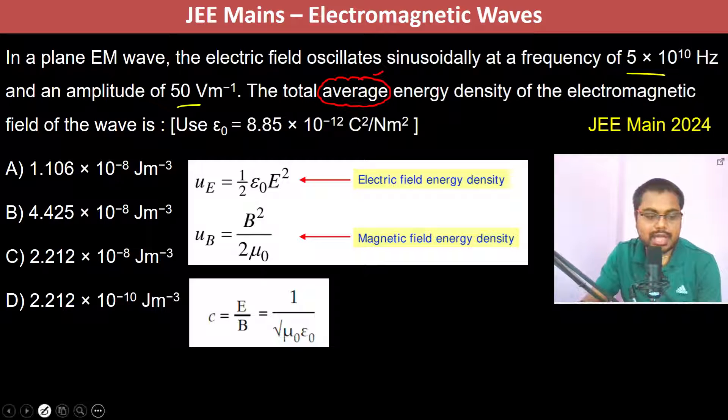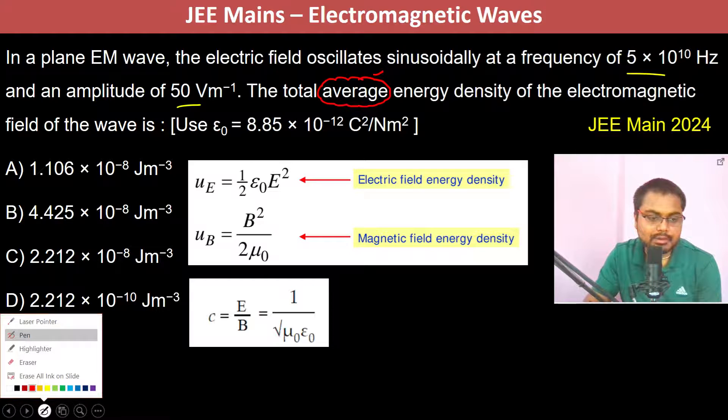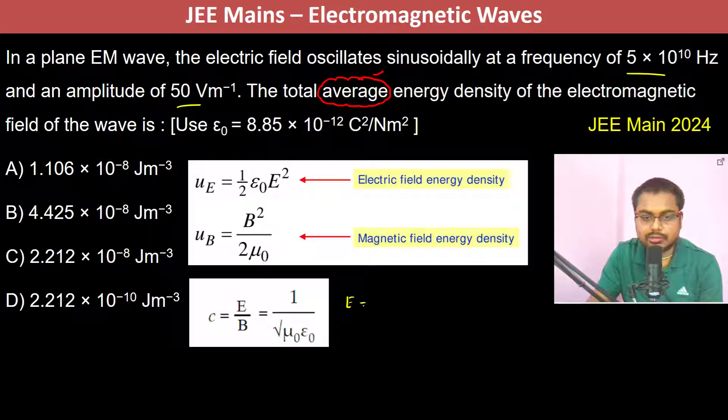Now what is this E, and the average is mentioned. So for example, we have E equals E naught sine of something. So this E naught is the peak electric field.